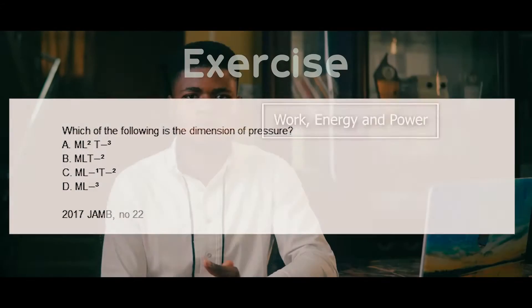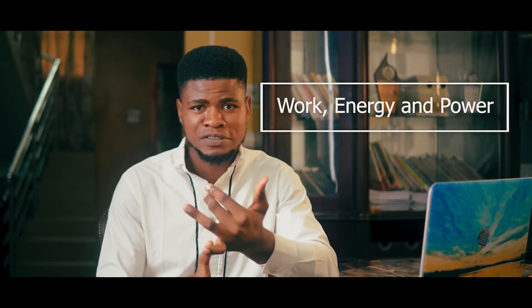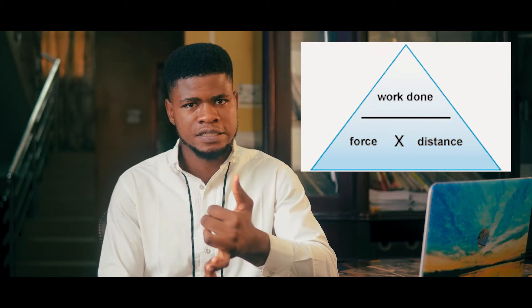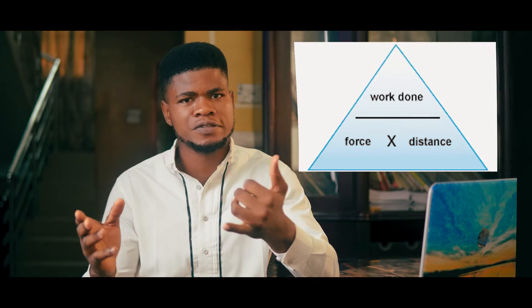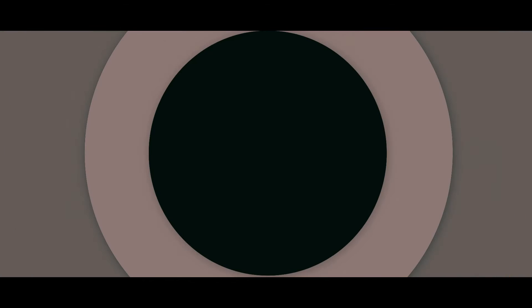The second is work, energy, and power. You should know the definition of work done, definition of power, definition of energy. Know that work done is equal to force times distance, and in some situations you can use MGH or half KE squared. You should know the formula for power — work done over time. You should know the law of conservation of energy and everything surrounding energy. If you think you're acquainted with this topic already, attempt the question on your screen.